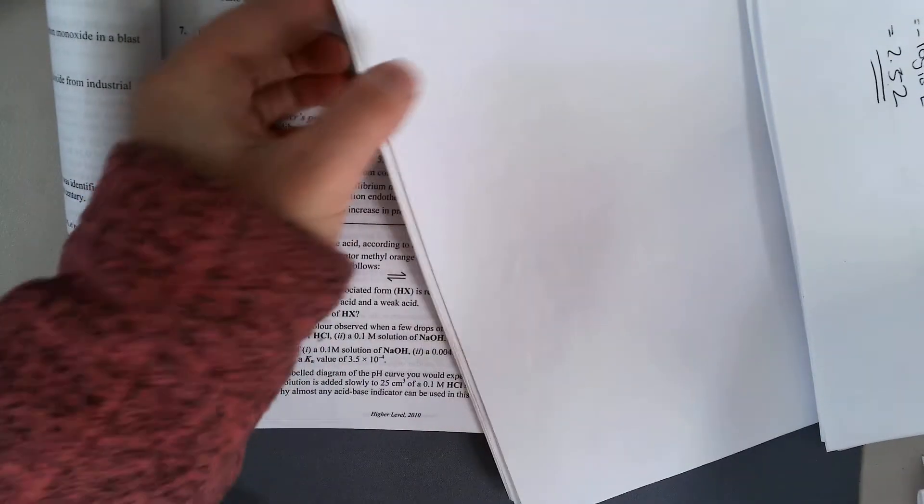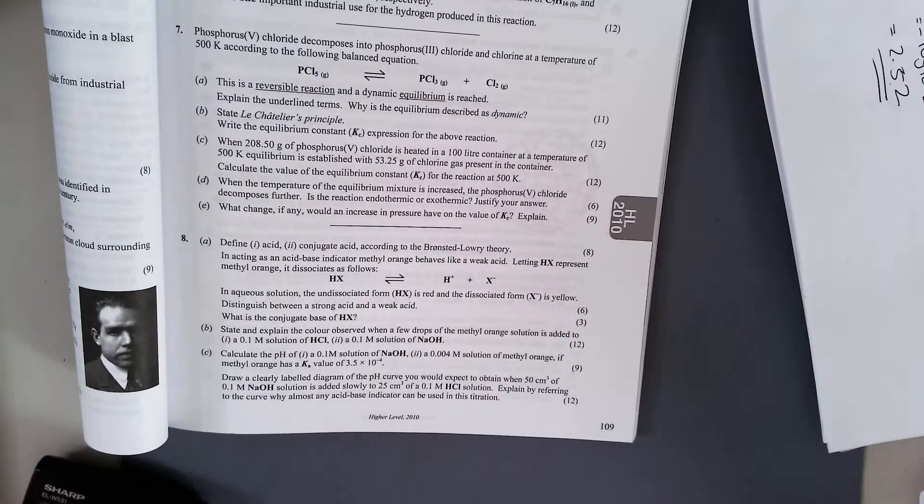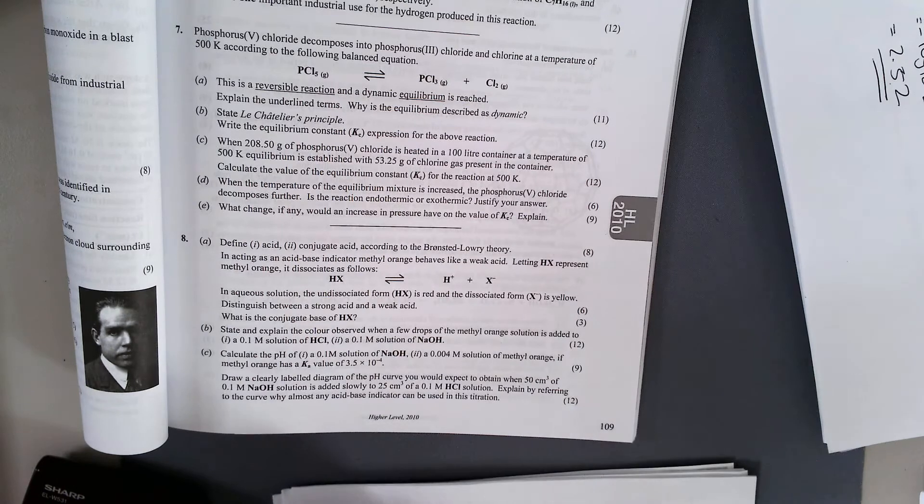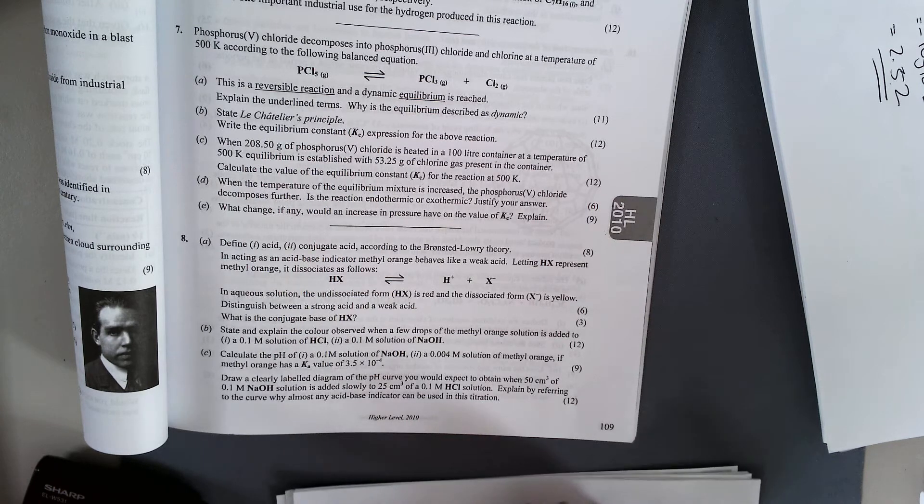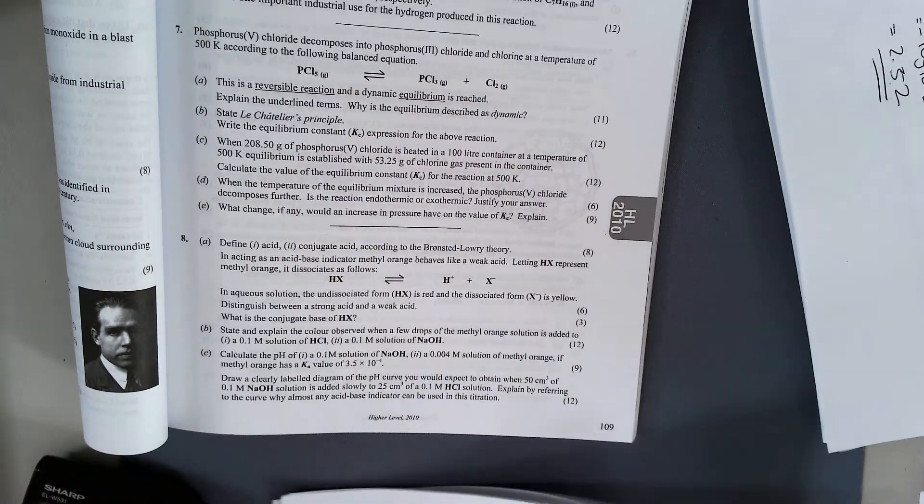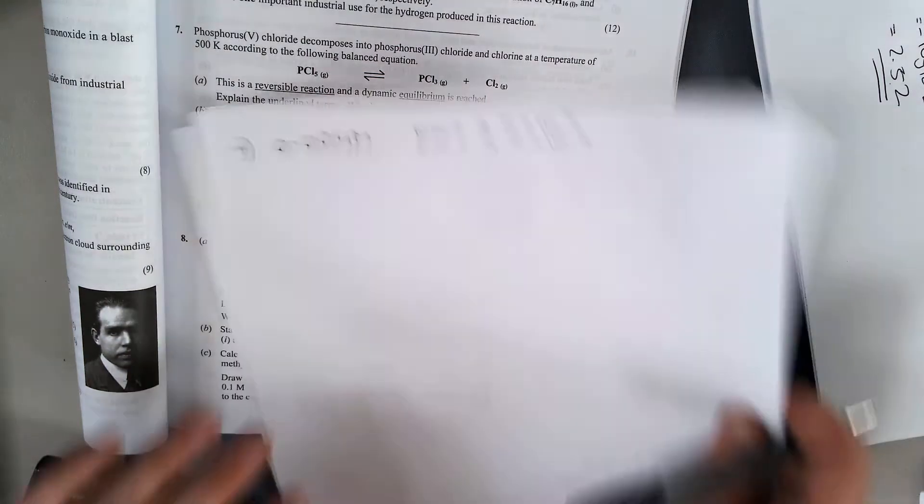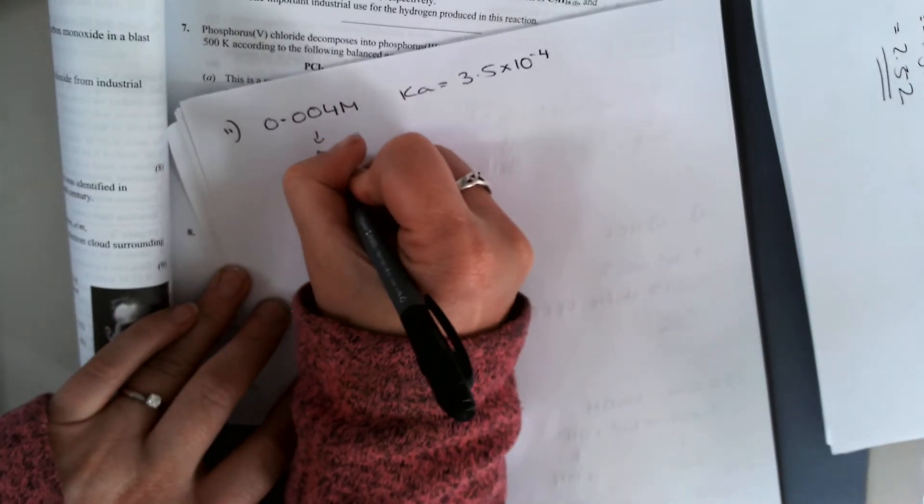Second part, I am asked for my pH if I have a 0.004 molar solution with the Ka of 3.5 by 10 to the minus 4. This is my Ma, and I have my Ka.